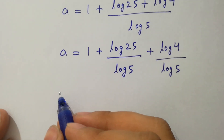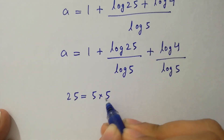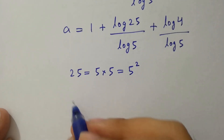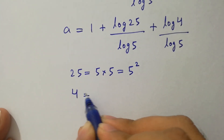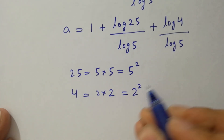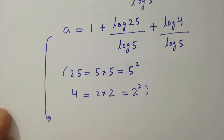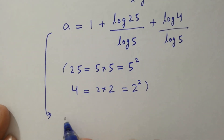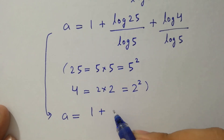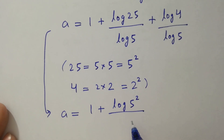Since 25 equals 5 times 5 which is 5 squared, and 4 equals 2 times 2 which is 2 squared, a will be equal to 1 plus log 5 squared over log 5, plus log 2 squared over log 5.